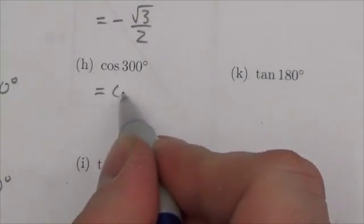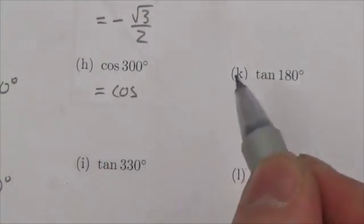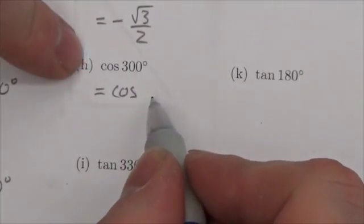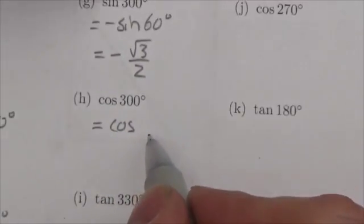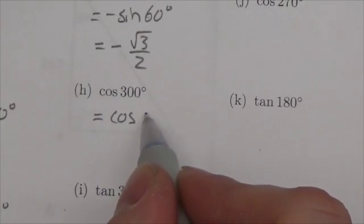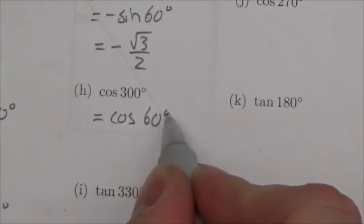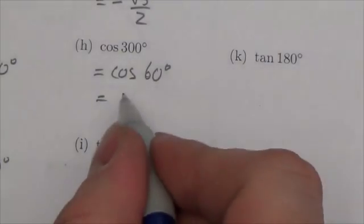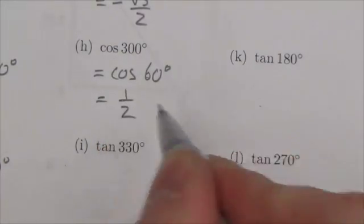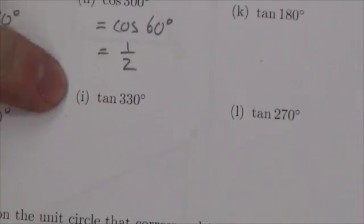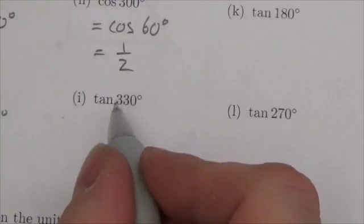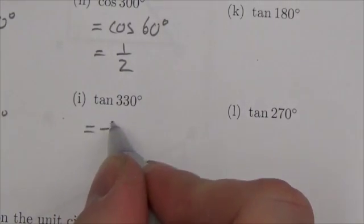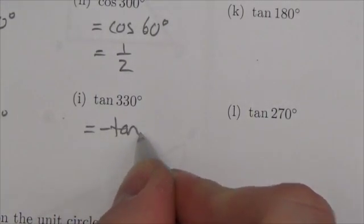Cosine of 300 degrees: cosine is positive in the fourth quadrant. The reference angle is again 60 degrees, just as in the previous question. The cosine of 60 degrees, whether using the unit circle or special triangles, equals one half.